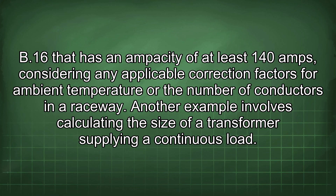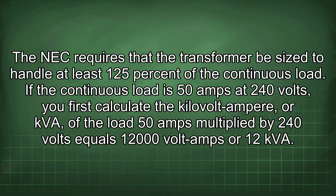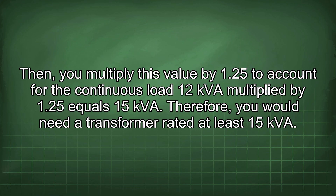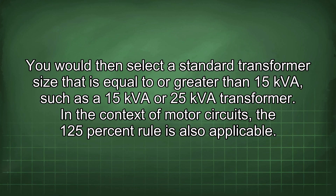Another example involves calculating the size of a transformer supplying a continuous load. The NEC requires that the transformer be sized to handle at least 125% of the continuous load. If the continuous load is 50 amps at 240 volts, first calculate the kVA of the load: 50 amps × 240 volts = 12,000 volt-amps or 12 kVA. Then multiply by 1.25: 12 kVA × 1.25 = 15 kVA. Therefore, you would need a transformer rated at least 15 kVA, such as a 15 kVA or 25 kVA transformer.